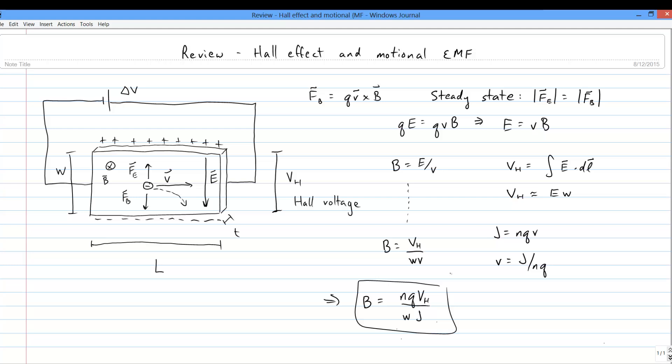Now, the term Hall effect refers to the voltage that you get when you run a current through a magnetic field. But any time you have charges moving through a B field for any reason, you might get a similar kind of voltage.